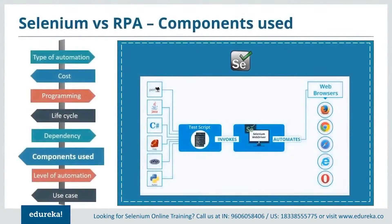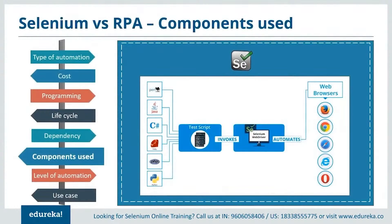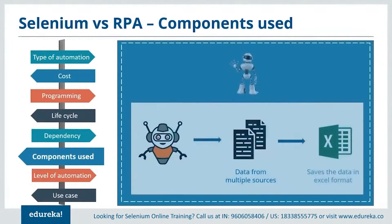Now let's talk about the major component used by these tools to automate a task. Selenium uses web drivers to automate any task. Test scripts written in any programming language can be invoked by the system and automated using Selenium WebDriver, which can run on different browsers like Chrome, Safari, Mozilla, and so on. Whereas RPA makes use of robots to complete a task.